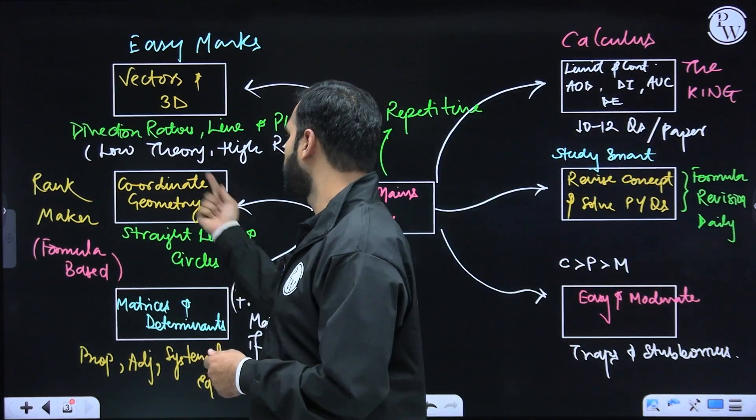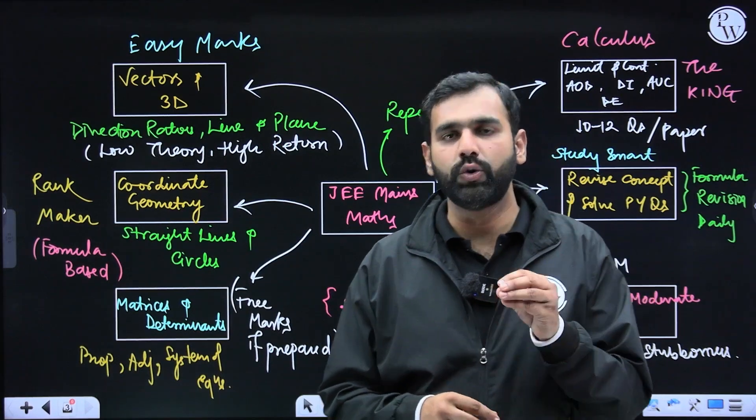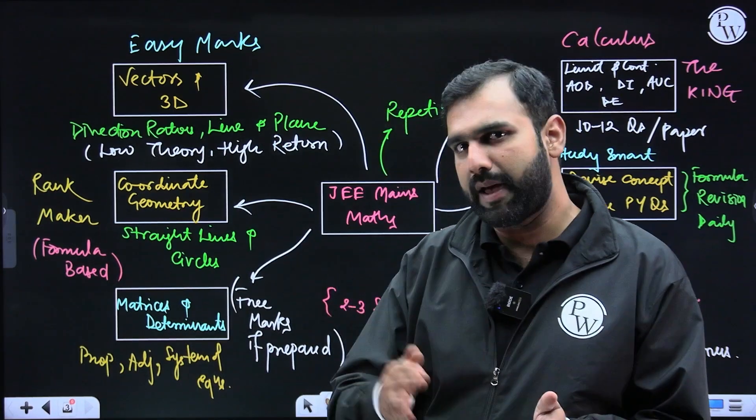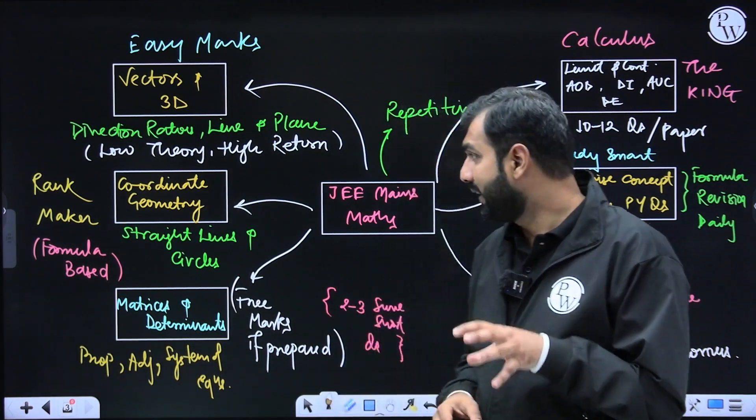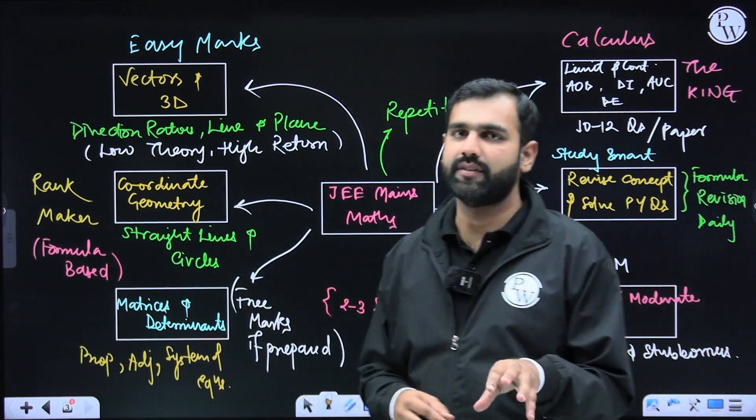Next, we talk about coordinate geometry. Specifically, coordinate geometry, you talk about straight lines and circles, then parabola, ellipse and hyperbola. So yes, they are the rank maker, this section specifically.